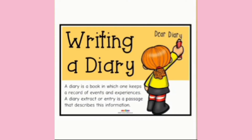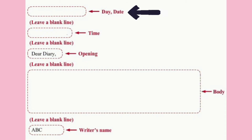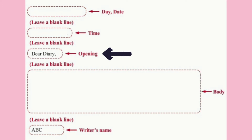Let us now look at the format for writing a diary entry. The date of the entry is always mentioned on the top left of the page. The day can also be mentioned along with the date. The next step is to write the time for a diary entry. Then comes the salutation, which is generally written as 'Dear Diary.'